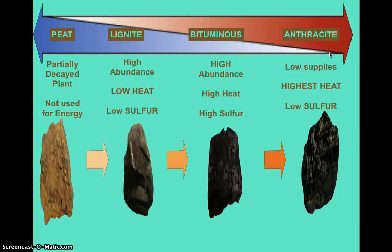If we analyze these stages of coal, starting with peat — it's decaying plant material and we do not use it for any form of energy. Lignite is very abundant on Earth, but when you burn it, it doesn't produce a lot of heat, so it's considered a low heat-producing type of coal. It also has low amounts of sulfur.